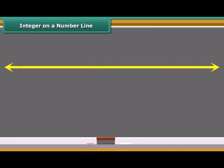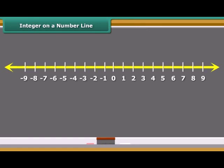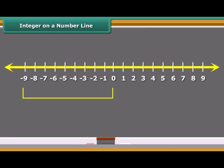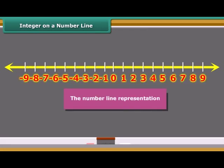This figure represents a line marked with some points at equal distance. A point on it is marked as zero. Points to the right of zero are positive integers. Points to the left of zero are negative integers and are marked minus 1, minus 2, minus 3, and so on. This type of representation of integers is called the number line representation.